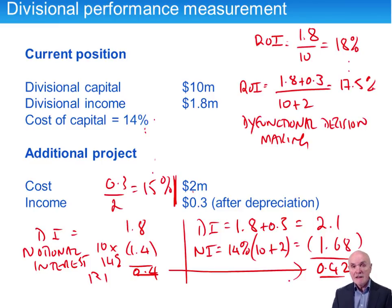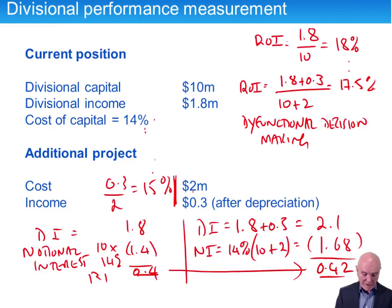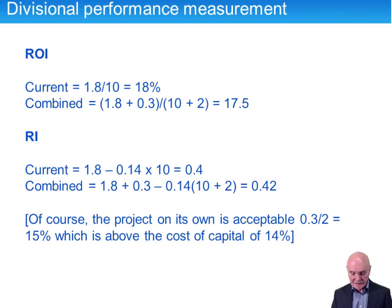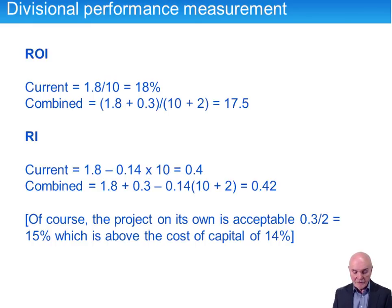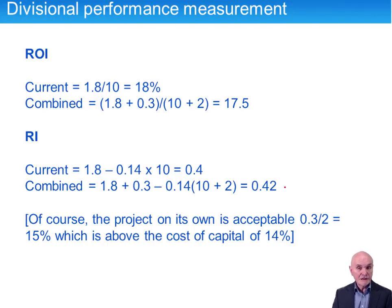This is one of the key advantages of residual income — though it's not guaranteed. To summarize: the return on investment went from 18% down to 17.5%, while the residual income went from 0.4 up to 0.42. It is the residual income which tends to push the manager in the correct direction.